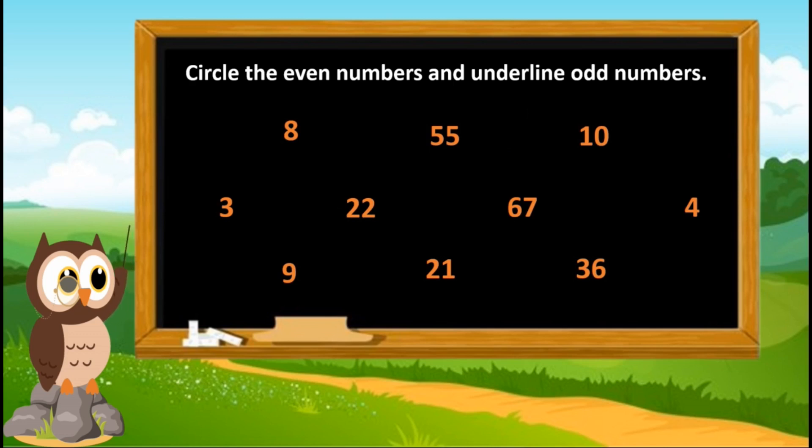Let's find out the even numbers first. Remember that all the numbers ending with zero, two, four, six, and eight are even numbers. So eight, ten, twenty-two, four, and thirty-six are even numbers.